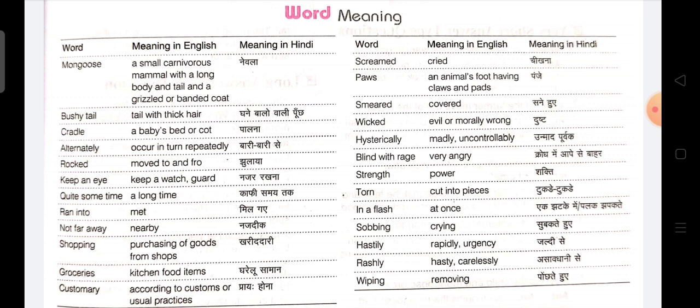Next one is alternately — alternately means occur in turn repeatedly, means bari bari se. Next one is rocked — rocked means move to and fro, means aage pichhe ki taraf jholana.